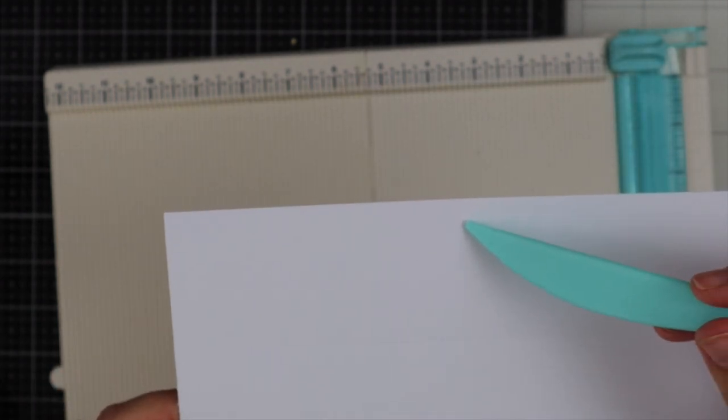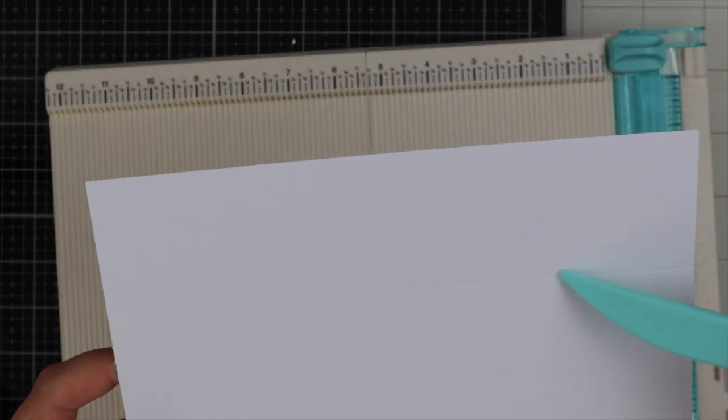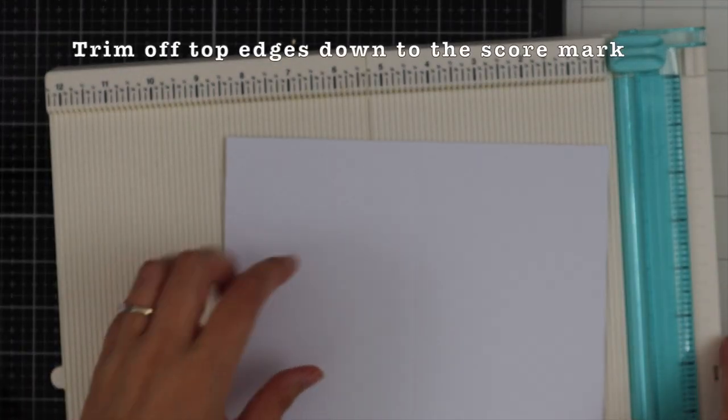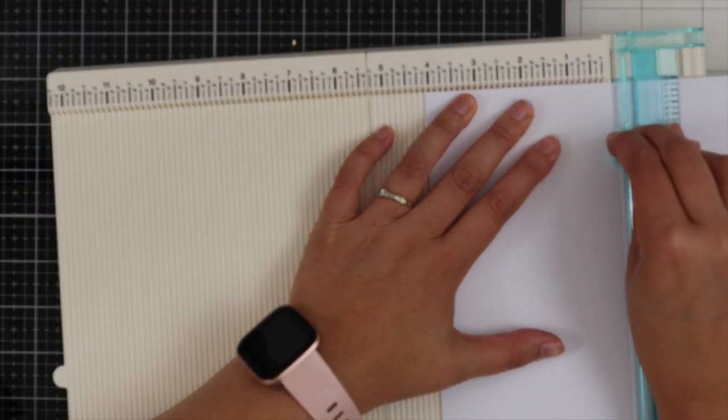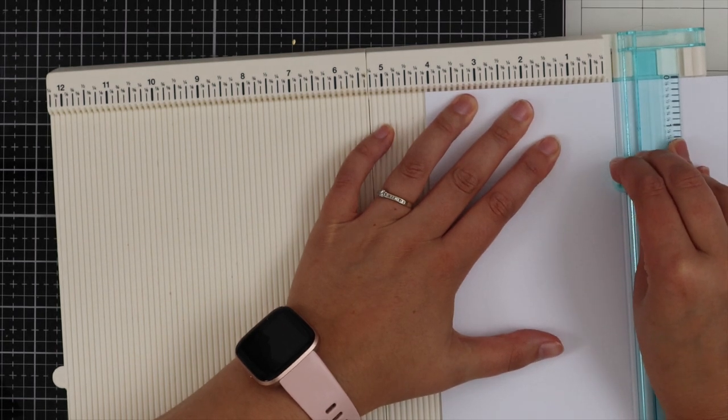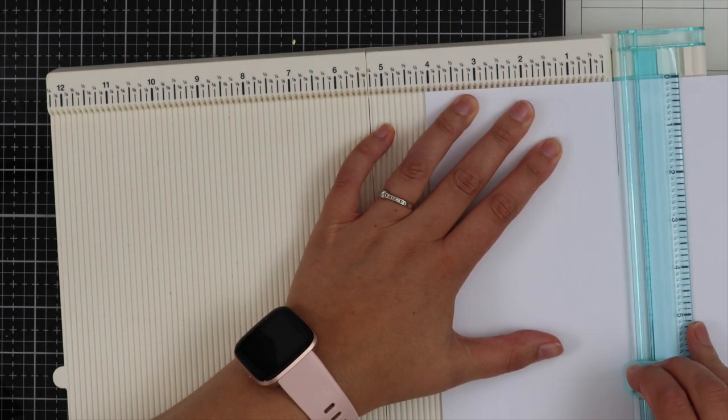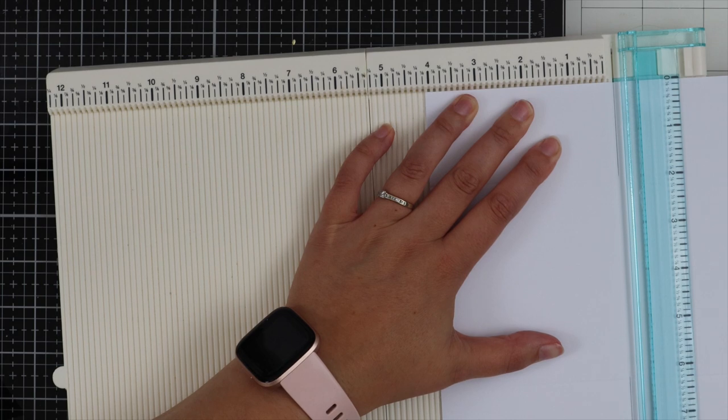I'm scoring on the opposite side again at two inches. Once all your score marks are down, your card should look like this. Now I'm cutting off the top side where I pointed with my score tool.